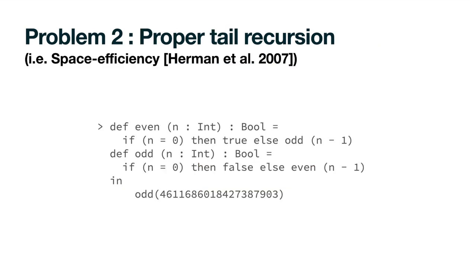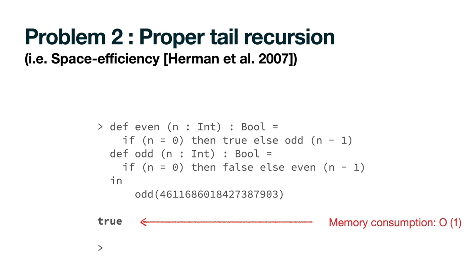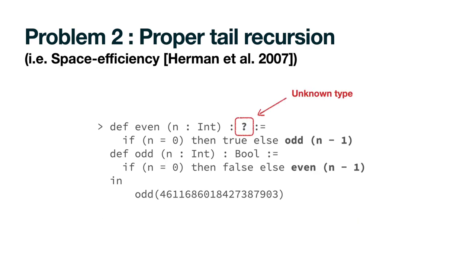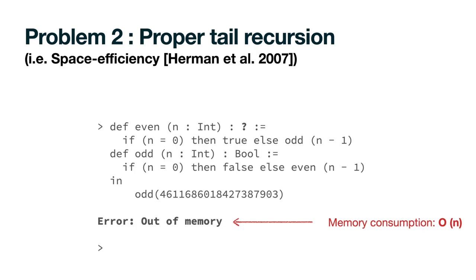The second problem involves memory consumption. Consider the following mutually recursive definitions of predicates, even and odd. In a properly tail recursive language, these recursive calls do not need to grow the stack, thus after some time, this program will produce its result using a constant amount of memory. We would expect this property of the static language to be preserved in its gradual counterpart, for example, if we did not know the return type of the even function. Unfortunately, this is not the case for the original design, as pending runtime checks accumulate on the stack until this program runs out of memory, because memory consumption is linear on the stack size instead of constant.